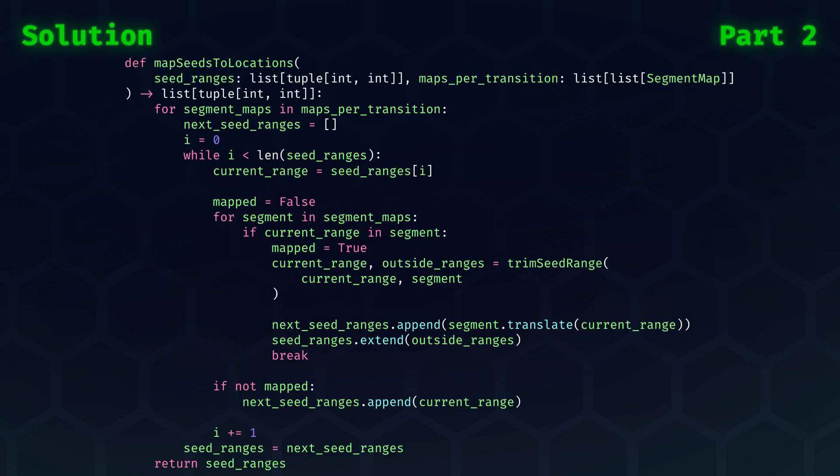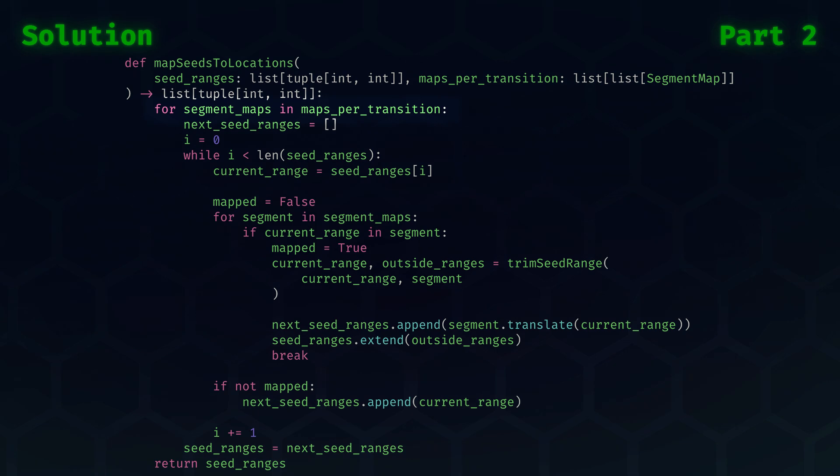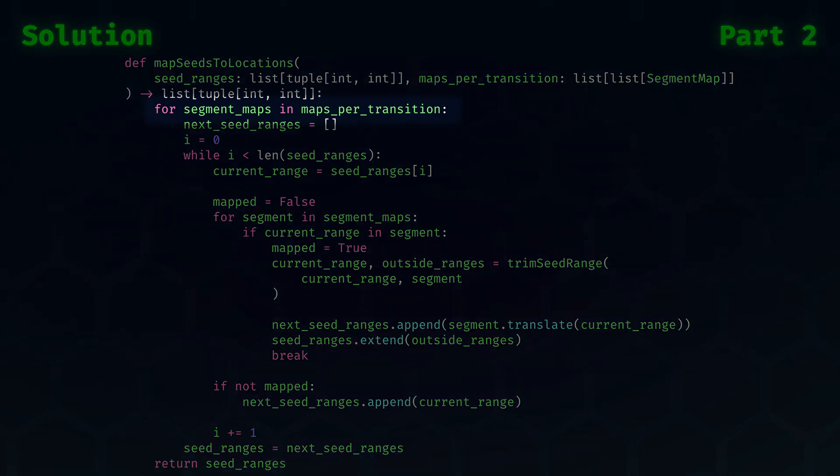Lastly, we need to tie this all together in the MapSeedsToLocations function. Let's step through this. The first key change is that we no longer push the seeds through the maps, but we flip this around. We are going to loop over the segment maps of every transition, and with those maps, we will update all ranges until there are no more ranges left to update for that transition.